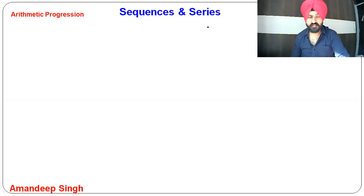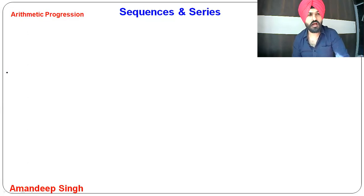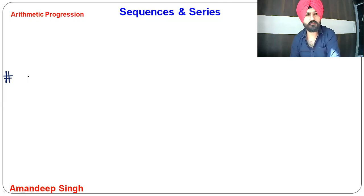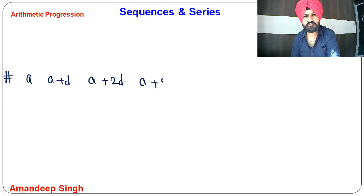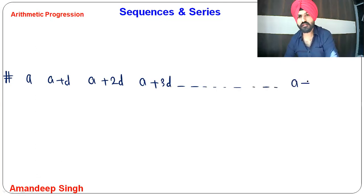Hello everyone. Let's talk about the next part of arithmetic progression. In this video we are going to learn how to find the sum of N terms of an AP and the basic rules. If we talk about AP, the first term is A, then A plus D, then A plus 2D, then A plus 3D, and so on. The last term is A plus N minus 1 into D.